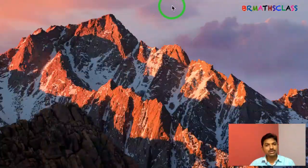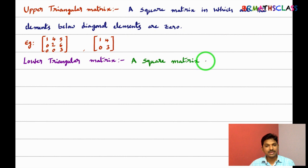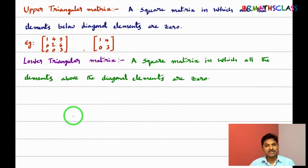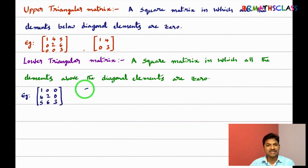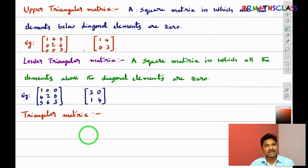And what about lower triangular matrix? Lower triangular matrix — a square matrix in which all the elements above the diagonal are zero. You can understand this easily with an example. See this. The diagonal elements are one, two, three. All the elements above the diagonal are zero. So it is a square matrix in which all the elements above the diagonal are zero — this matrix is lower triangular matrix.